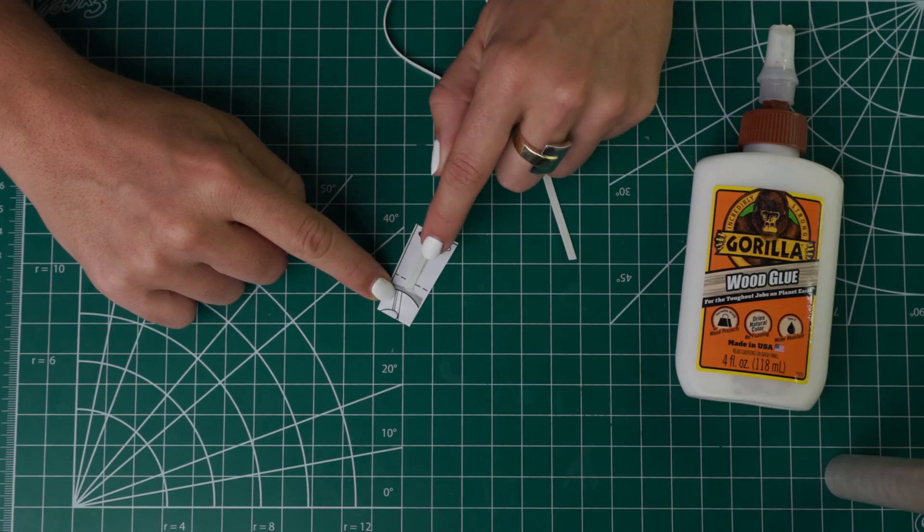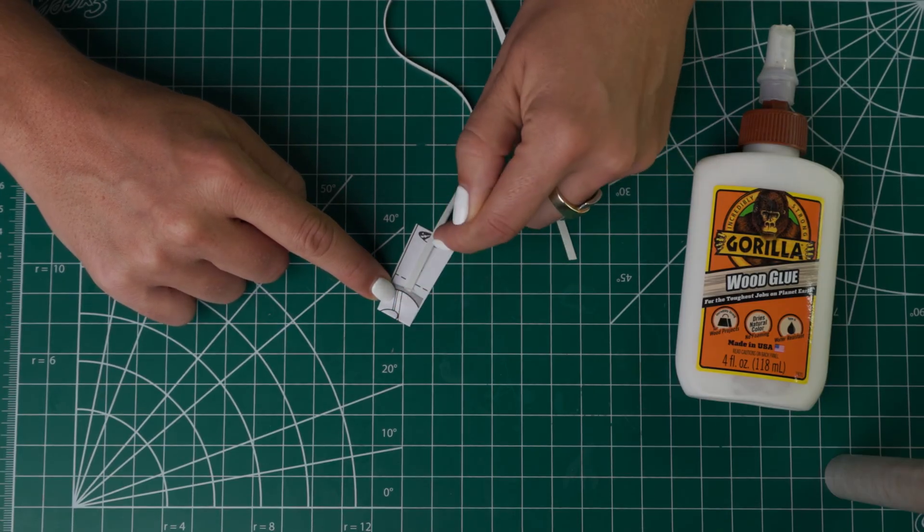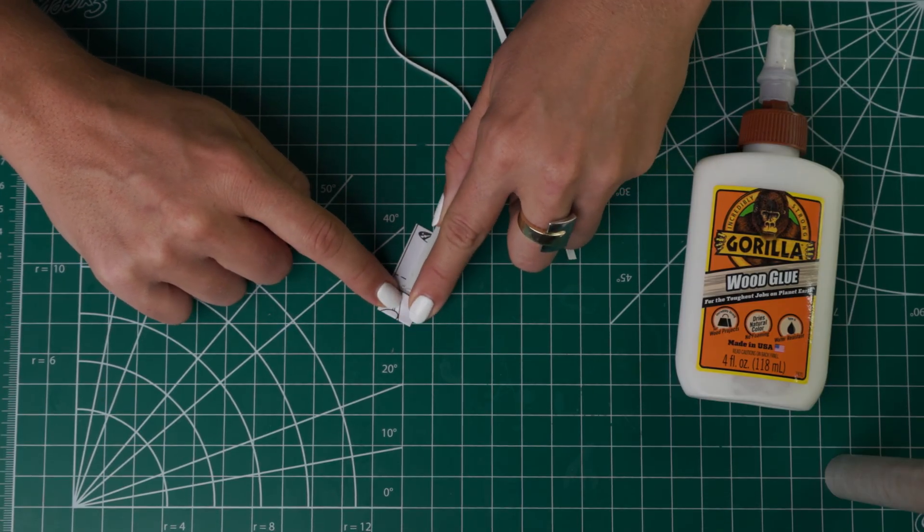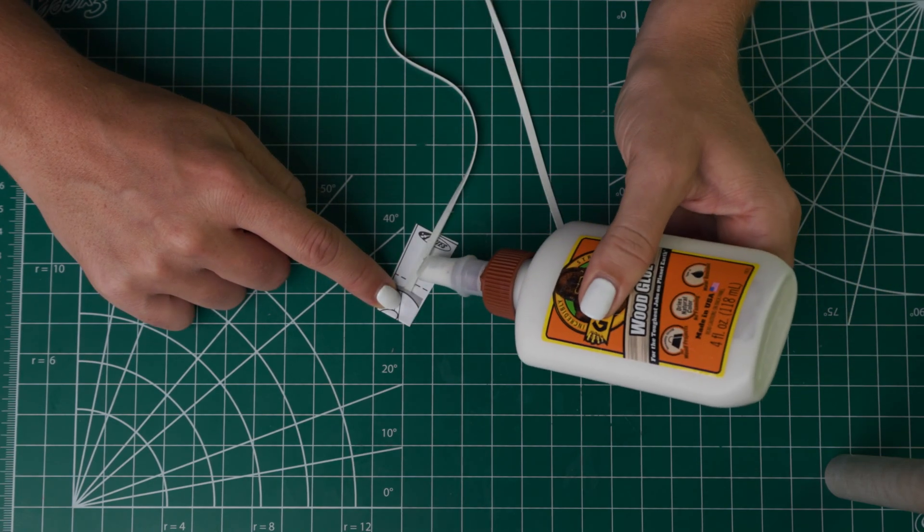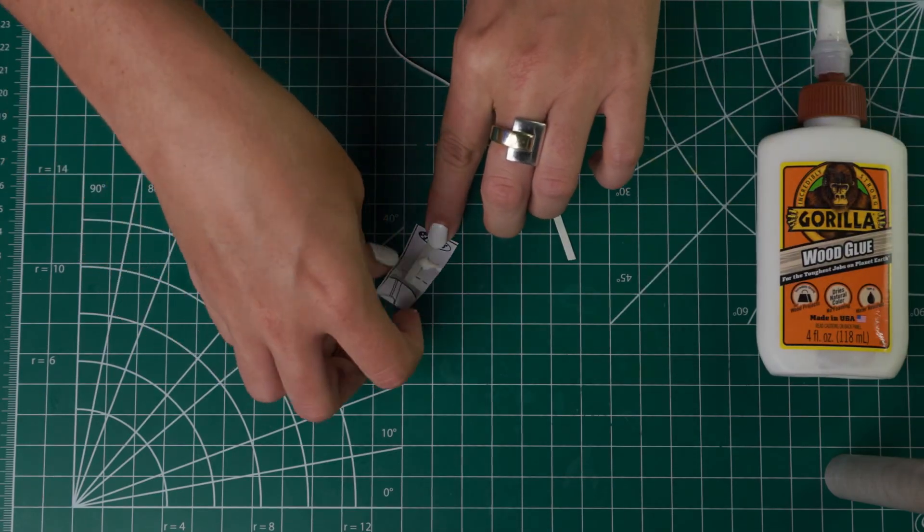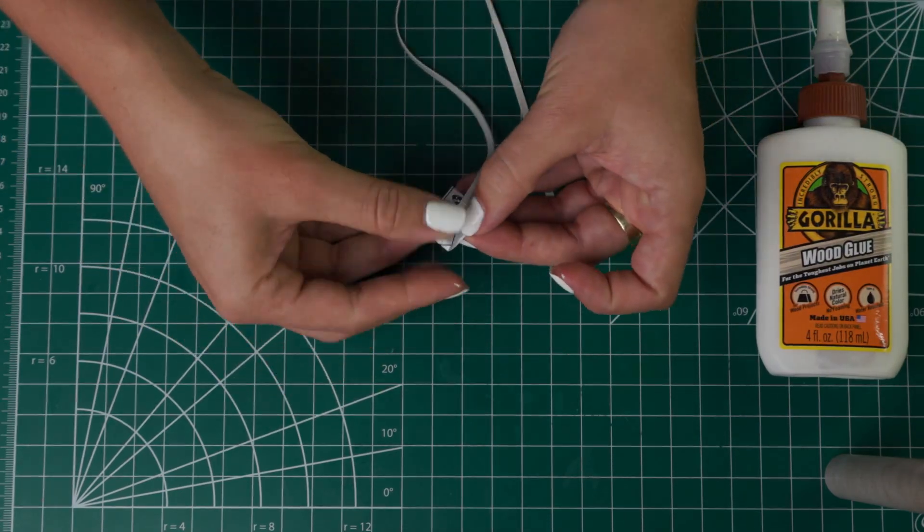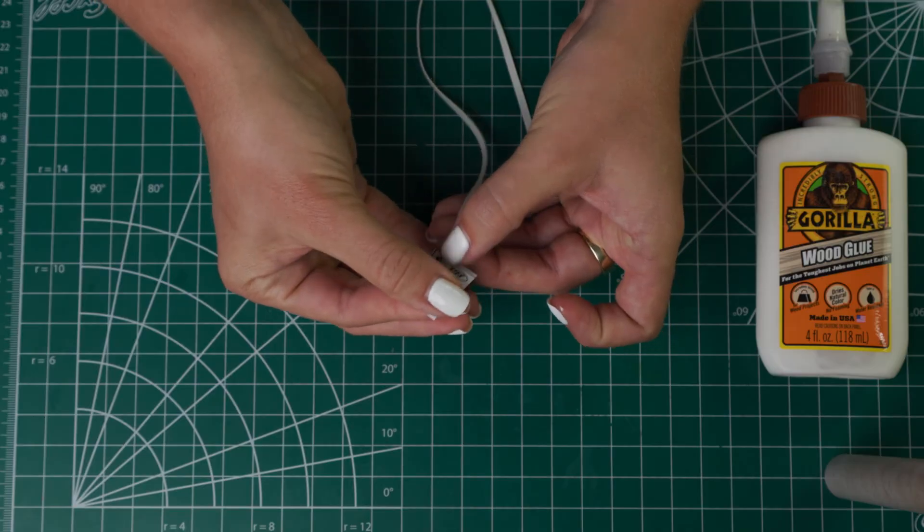Let that set for a second and then you'll do the same thing. Put some glue here and fold it over. Make sure that you don't use too much glue here. You don't want it to soak through the paper so you really don't need too much. Then you can just hold that for a second to make it set.